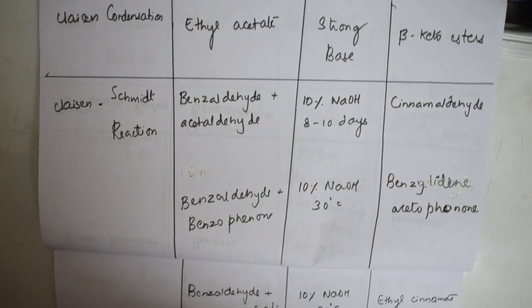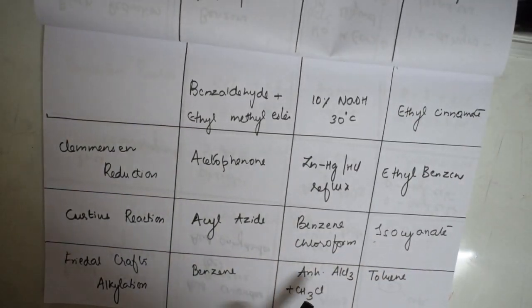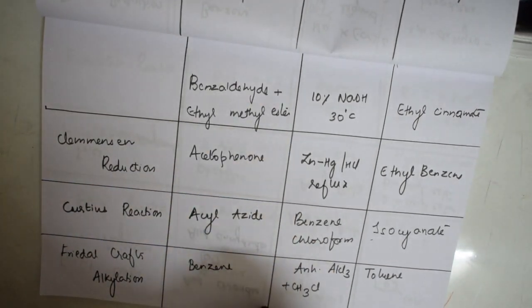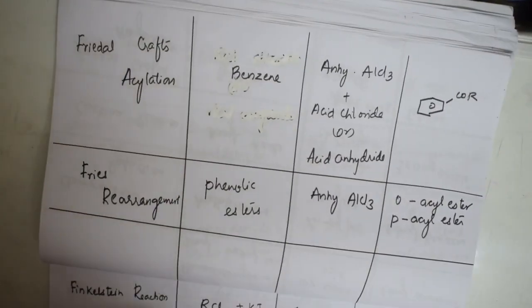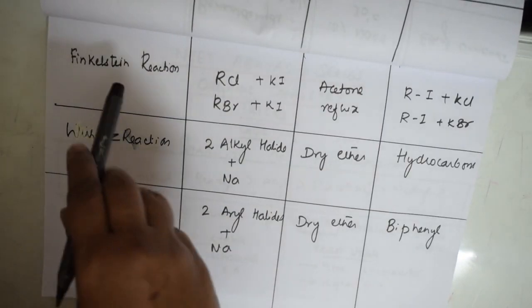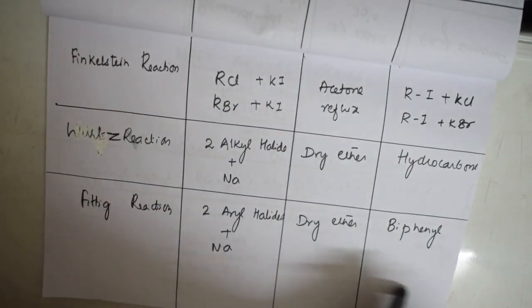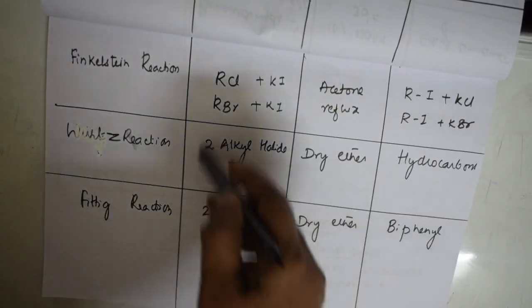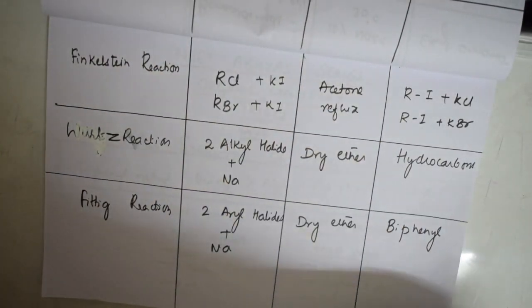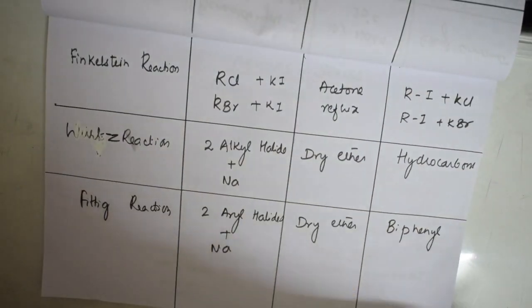Continuing the name reactions table with C: Claisen condensation, Claisen-Schmidt reaction, Clemmensen reduction, Curtius rearrangement, Friedel-Crafts acylation, Finkelstein reaction, Woods reaction, Fries rearrangement. For each, I've listed the reactant, reagent or catalyst or solvent, and the product. You can note these and stick them near your study table.